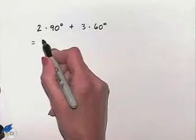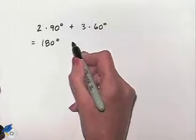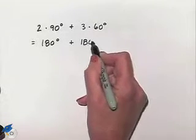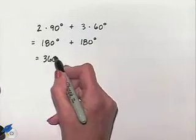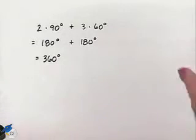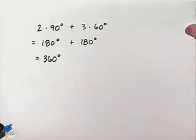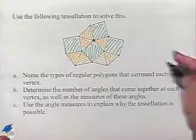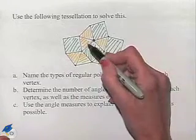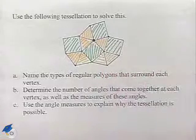That's going to give us 180 degrees plus another 180 degrees, which is going to equal 360 degrees, which would be a full revolution. So back on our picture, we're able to see that as we move around, we're going to have 360 degrees, which allows the tessellation to work.